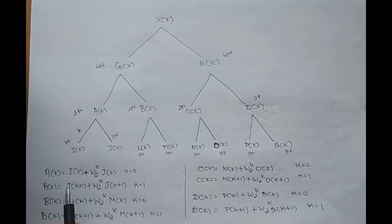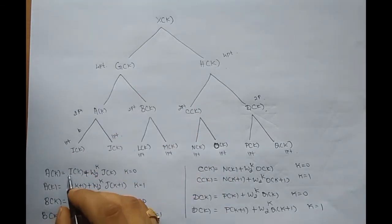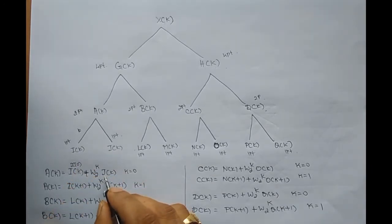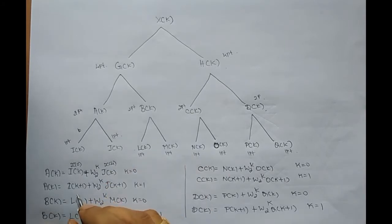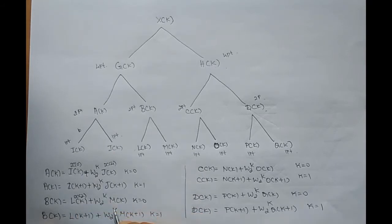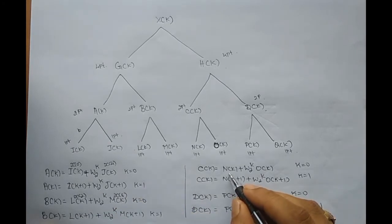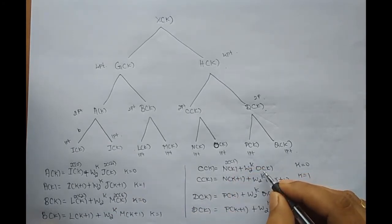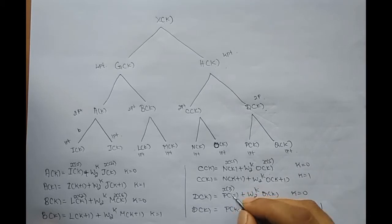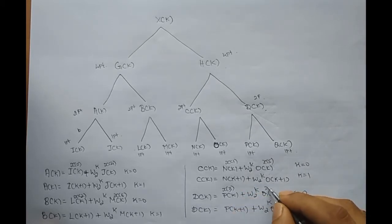Now if you trace the input samples in terms of x of n: i of k corresponds to x of 0 and j of k corresponds to x of 4. l of k corresponds to x of 2 and m of k corresponds to x of 6. Similarly, n of k corresponds to x of 1 and o of k corresponds to x of 5. p of k corresponds to x of 3 and q of k corresponds to x of 7.